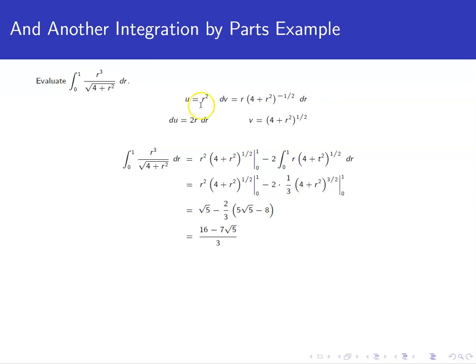So now when we do our integral, uv is r squared 4 plus r squared to the 1 half. We're going to evaluate that from 0 to 1. We've got a 2 here for our constant, so we can pull that out in front. So we get 2 times the integral from 0 to 1 of r times 4 plus r squared to the 1 half, when we multiply v and du together.